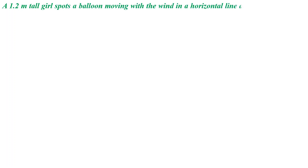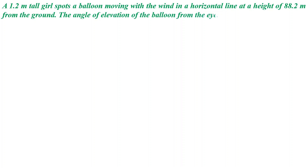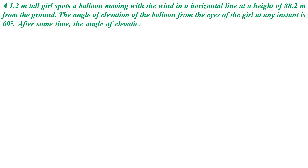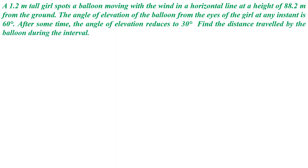The first question is: A 1.2 meter tall girl spots a balloon moving with the wind in a horizontal line at a height of 88.2 meters from the ground. The angle of elevation of the balloon from the eyes of the girl at any instant is 60 degrees. After some time, the angle of elevation reduces to 30 degrees. Find the distance travelled by the balloon during that interval.